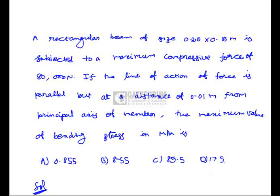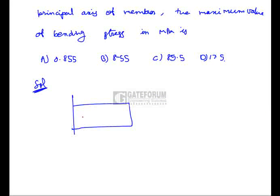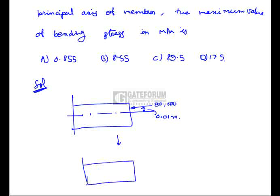Coming to the solution: a rectangular member of cross section 0.25 x 0.15 is subjected to a compressive load of 80,000N parallel to the principal axis, but at a distance of 0.01m from the principal axis. So 80,000N of compressive load acts at a distance of 0.01m from the central axis. Resolving all forces along the central axis, we have a couple of 80,000 x 0.01 = 800 Nm moment and a compressive force of 80,000N along the central axis.